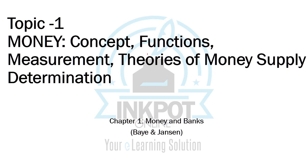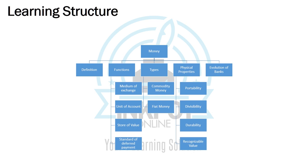Hello everyone, welcome to the first lecture on the Money and Finance course. This lecture is based on Bay and Jensen's Chapter One reading, which is 'Money and Banks.' Our learning structure broadly covers: the definition of money, then the functions of money, then the types and physical properties of money, and a little about how banks have evolved over the years. This slide is very important — once you finish the lecture, come back to it and see if there's any concept you haven't picked up, and give us feedback.